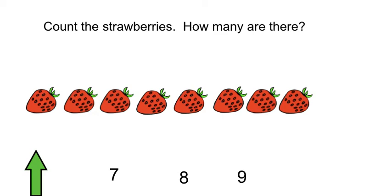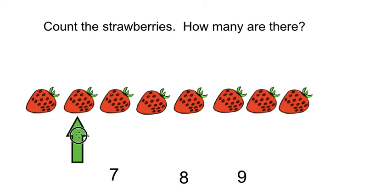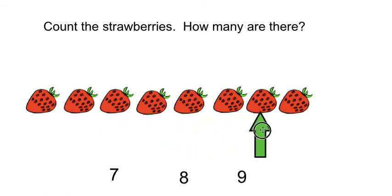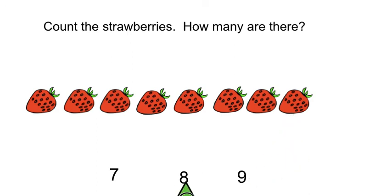Let's see what our next one is. Count the strawberries — how many are there? Alright, touch the first strawberry — this is the first strawberry. Let's count. Ready? 1, 2, 3, 4, 5, 6, 7, 8. There are 8 strawberries. Can you find number 8? Good job finding number 8.